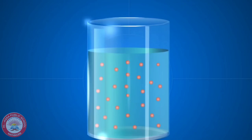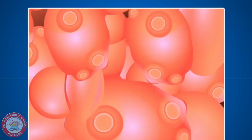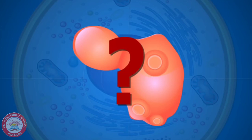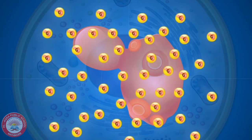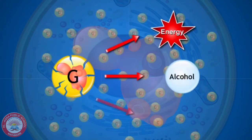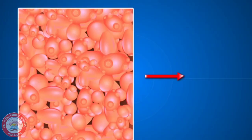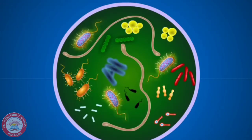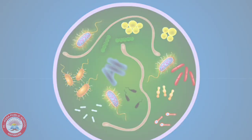This is yeast in sugar solution. Do you know how yeast cells get energy? They get energy by anaerobic respiration. That is, in the absence of oxygen, glucose will be broken down to release carbon dioxide, alcohol, and energy. As yeast produces alcohol in the process of respiration, it is used for the preparation of wines and beers. The organisms like yeast which undergo anaerobic respiration are called anaerobes.